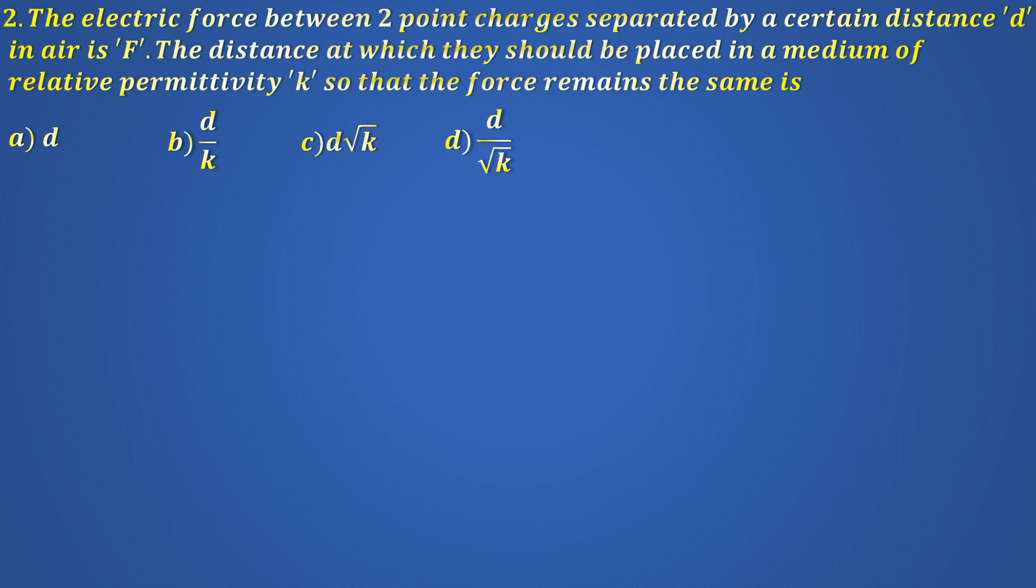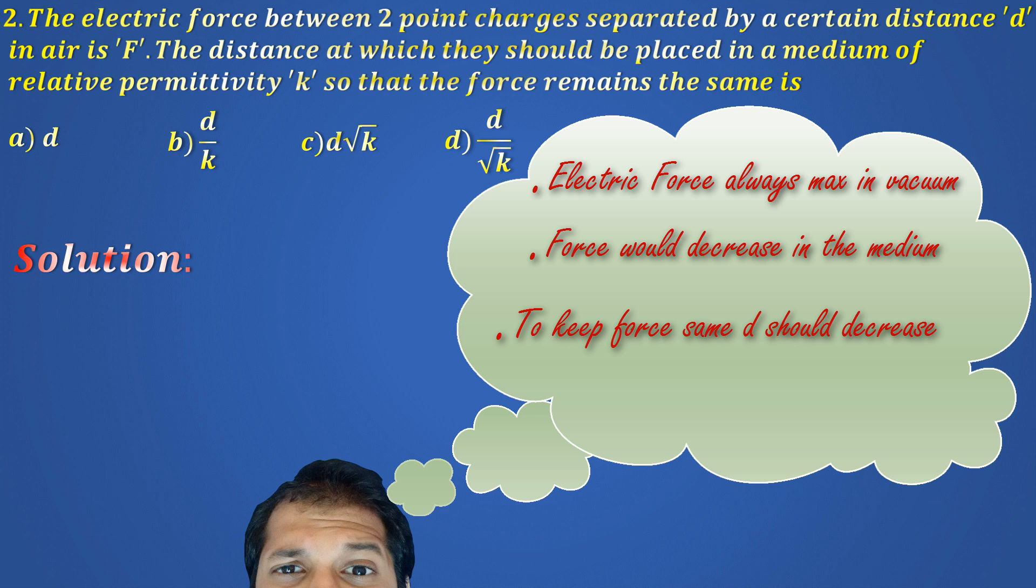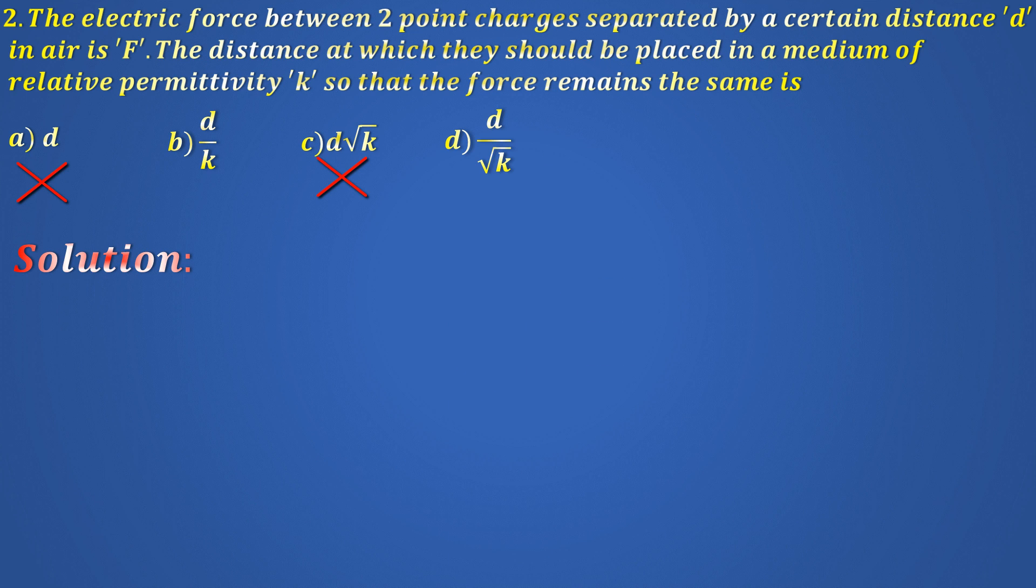Two charges separated by some distance D in vacuum experience a force F. Now they are put in a medium of dielectric constant K. What's the new distance such that the force remains the same? Solution! The first thing you can think about is that the force is always maximum in vacuum. Thus, the force would decrease in that medium if the distance was unchanged. Therefore, the distance must be reduced to keep the force from decreasing. Makes sense right? So the new distance must be smaller than the old distance, which immediately eliminates options A and C. Okay, now let's work it out.